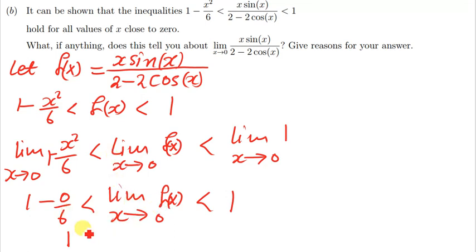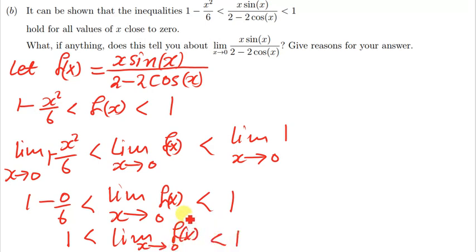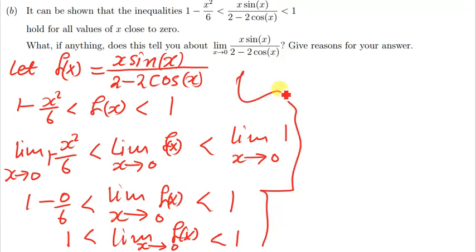So we now have: 1 is less than the limit of f(x) as x approaches 0, which is also less than 1. According to the squeeze theorem, if you have the same number on both sides of the inequality, then the limit of the function in between must be equal to that same number.